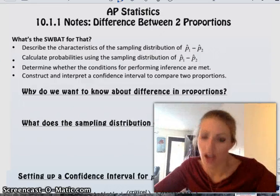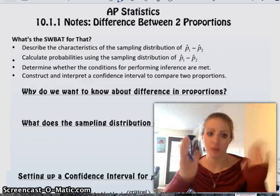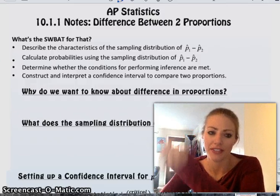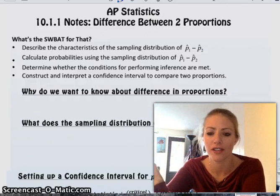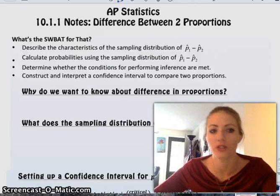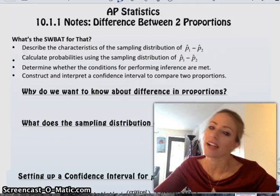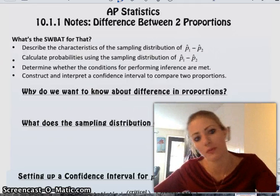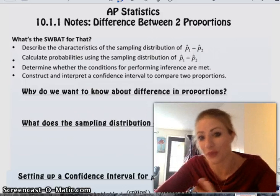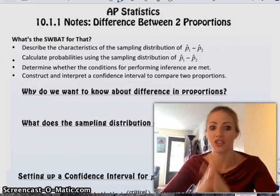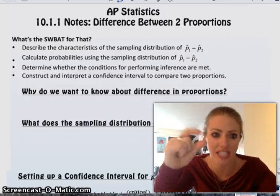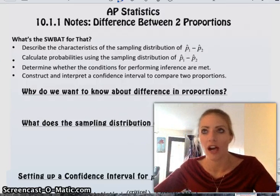But this time we're doing differences in proportions or differences in means. So today we're going to focus on proportions, differences of proportions, and we're going to look at the sampling distribution of difference of proportions and talk about how to create a confidence interval for difference of proportions. So most of this stuff is really similar. The general setup is the same. It's just the little details that change.